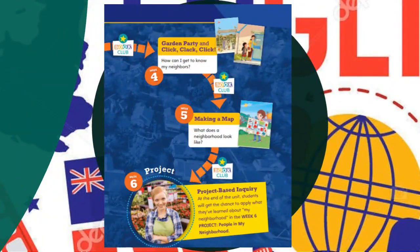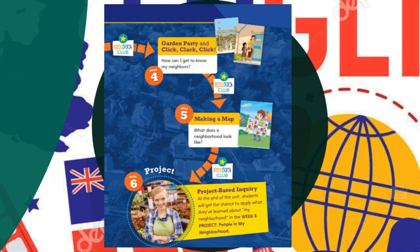In week four we will read 'Garden Party' and 'Click Clack Click.' The essential question is: how can I get to know my neighbors? Week five is 'Making a Map' — what does a neighborhood look like? After reading and learning about different texts, we will apply what we've learned through a project-based inquiry where you'll build your own town or make a map.